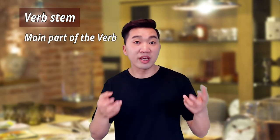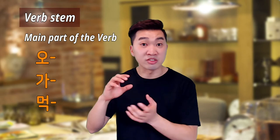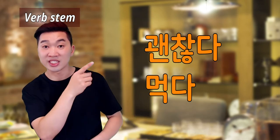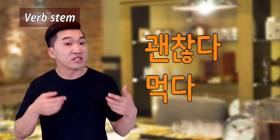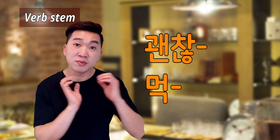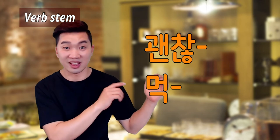Let's talk about verb stem first. Each Korean verb has a stem — the verb stem means the main part of the verb. If you look up the dictionary, every verb ends with 다, like 오다, 가다, 먹다, etc. If you remove 다 from the dictionary form, that is the verb stem. Here are example verbs: 괜찮다 and 먹다 — those are the dictionary forms. So the verb stems are 괜찮 and 먹, just by removing 다.